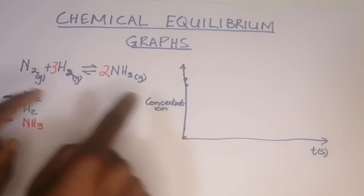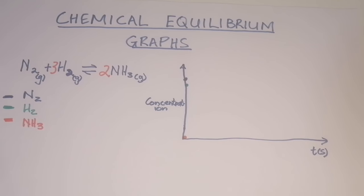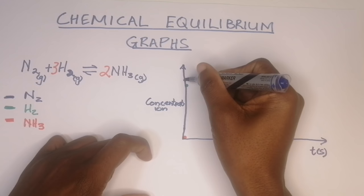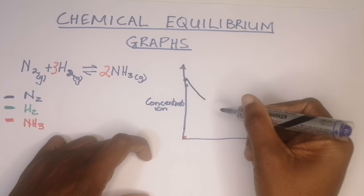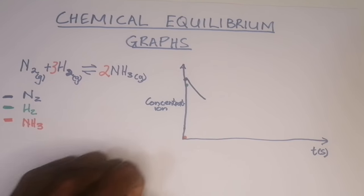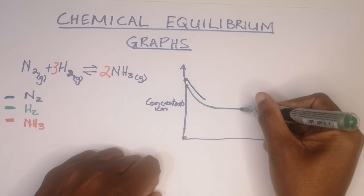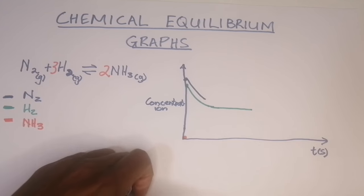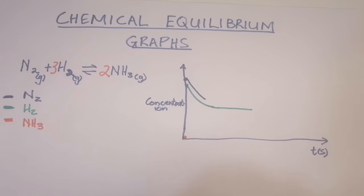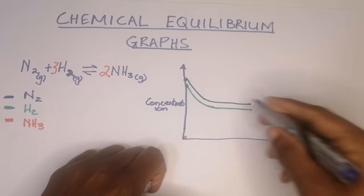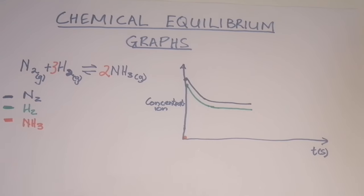As the reaction begins, we are using up the reactants, so naturally the reactants are going to decrease, while ammonia, the product, is going to increase. So nitrogen and hydrogen begin to decrease and their curves flatten. The same trend is followed by hydrogen until the curve kind of flattens.